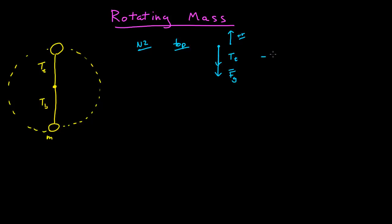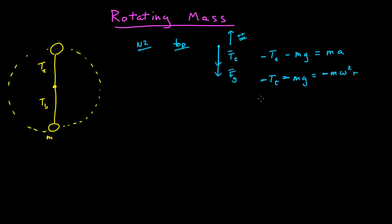So I can apply Newton's second law. In the r direction, I have negative magnitude of the tension T sub T, minus the force due to gravity, negative mg, since it's also pointing down, equal to the mass times its acceleration. Since it's going through a vertical circle, that gives: negative T sub T minus mg equals negative m·ω²·r. Canceling minus signs, I can also write T sub T plus mg equals m·v²/r — that's another way to write the radial acceleration equation.